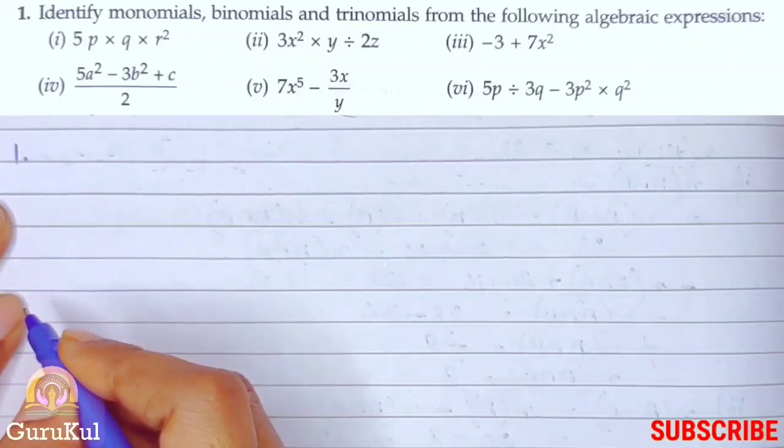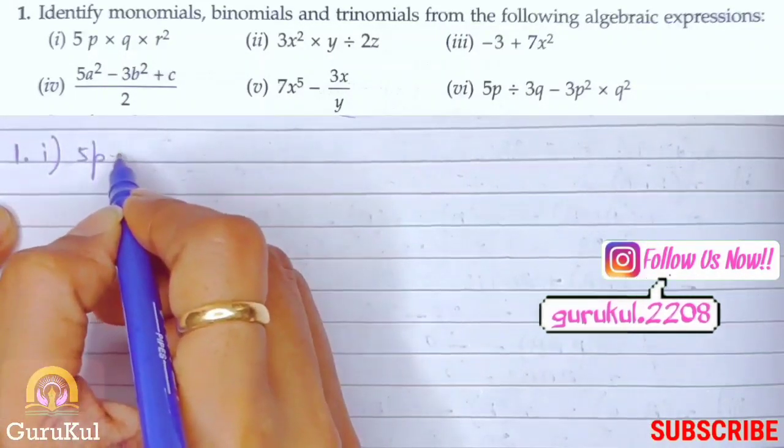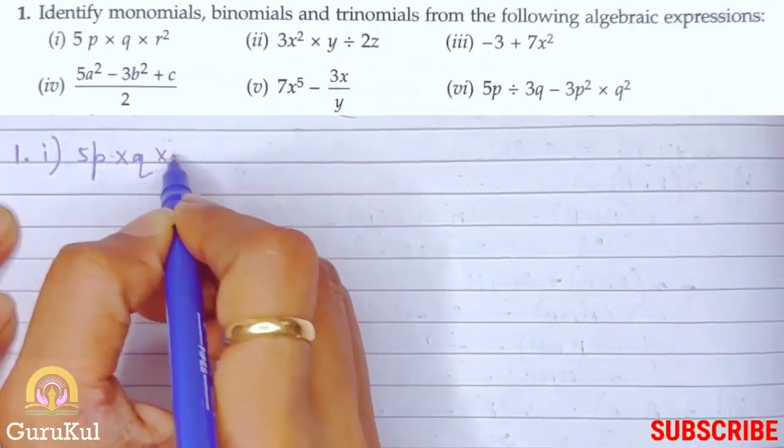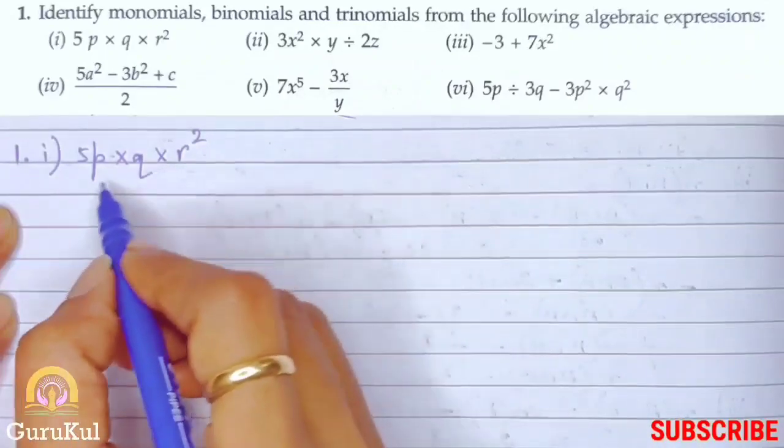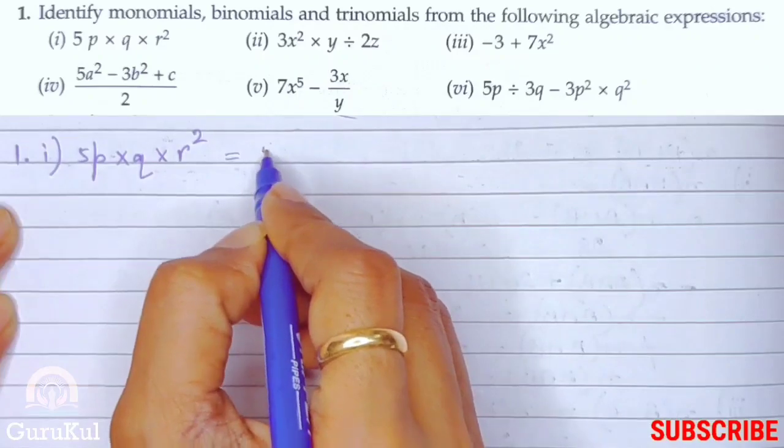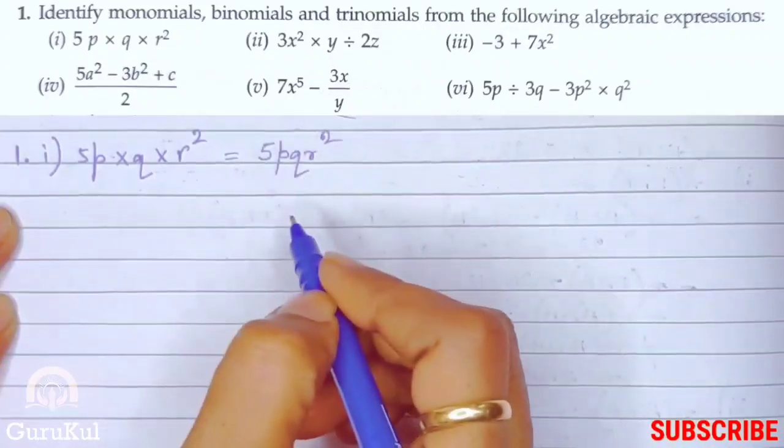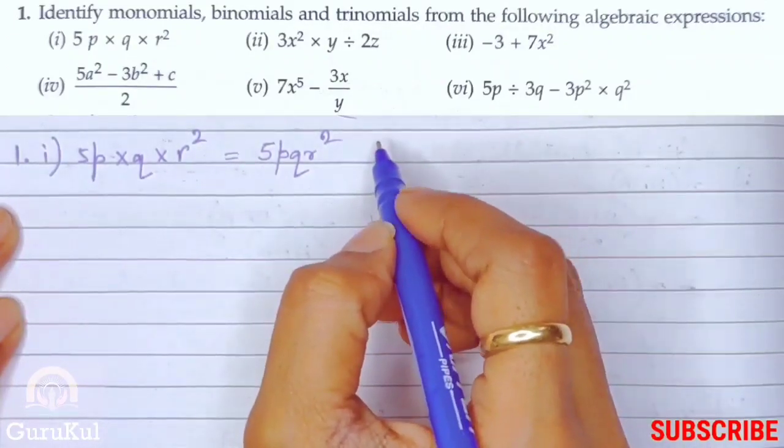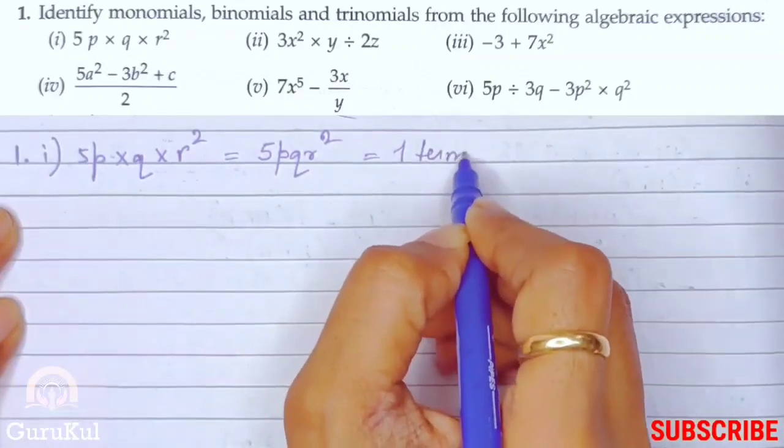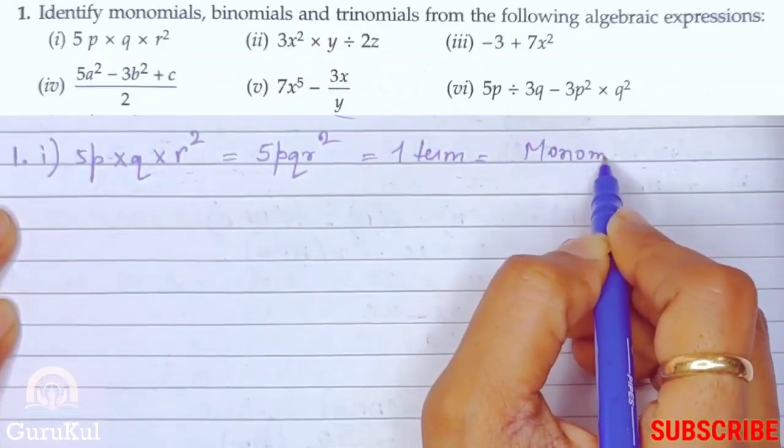We need to identify monomials, binomials and trinomials from the following algebraic expression. So the first one, it is 5p into q into r square. Now see, there is multiplication sign in between. So we can write this as 5pqr square. That means it is a term, right? So this is our term, one term equals monomial.